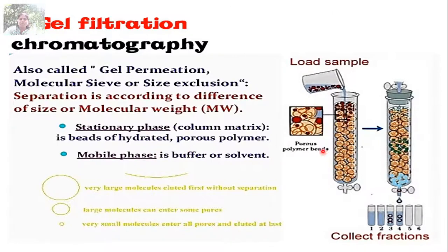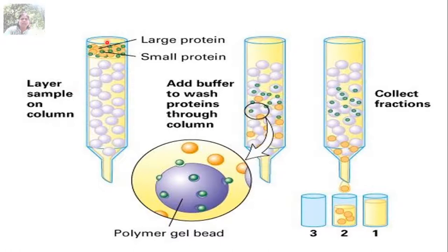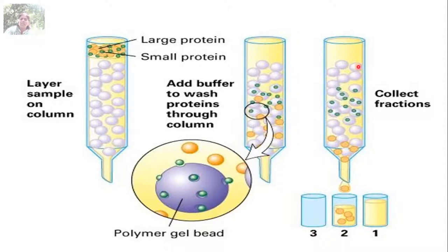Beads of hydrated porous polymer are packed in the column and a mobile phase buffer is added to allow movement of the protein mixture through the column. Larger protein molecules cannot penetrate through the pores, so they move between the stationary porous beads and elute first. Smaller proteins take longer because they must travel through the porous beads, so they take longer to elute from the column.